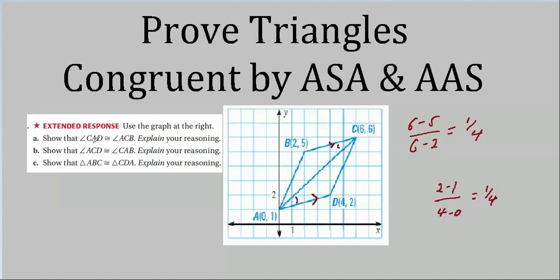So what do we have? This angle is congruent to this angle, this angle is congruent to this angle, and this side is congruent to itself. It looks like angle side angle — and that in fact is how you know that these two triangles are congruent.